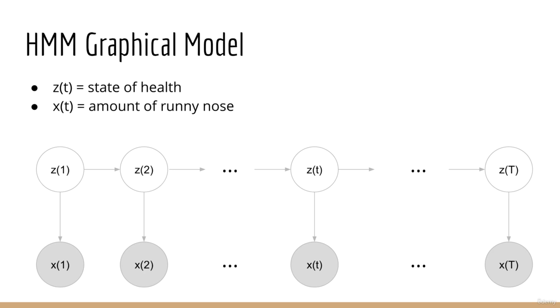Furthermore, notice how the relationship between the observations and the hidden states is also Markov. x at time t depends only on z(t). That is to say, my amount of runny nose does not depend on whether I was healthy or sick yesterday or tomorrow. Of course, logically that makes sense. The amount of runny nose I have today is dependent on my state of health today.